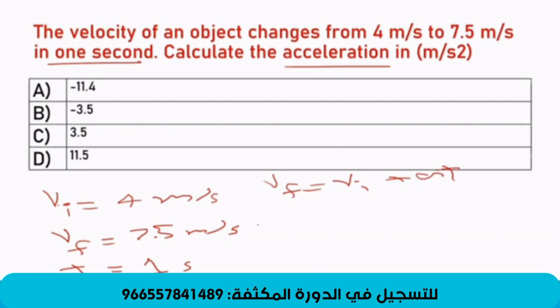If we substitute here, VF, it is 7.5. And VI, it is what? Four. Plus A times one. So, you need to bring this four here. So, it will be 7.5 minus four equals A times one. It is A for sure. So, it will be what? 3.5. Is it clear, Hassan?